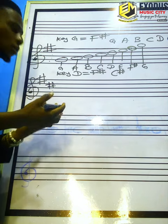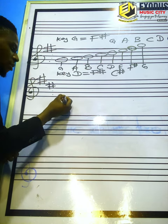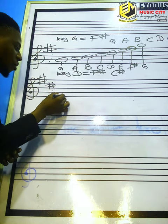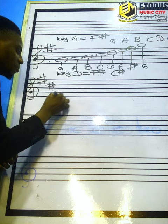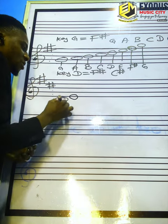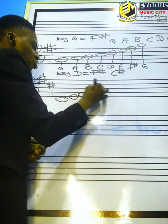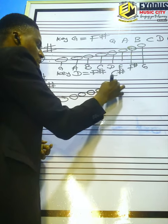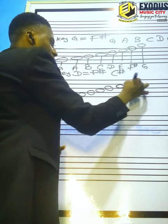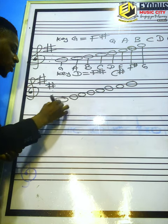Then you look for your D. This line is E, and before E this space is D. After D: line E, F, G, A, B, C, and D.